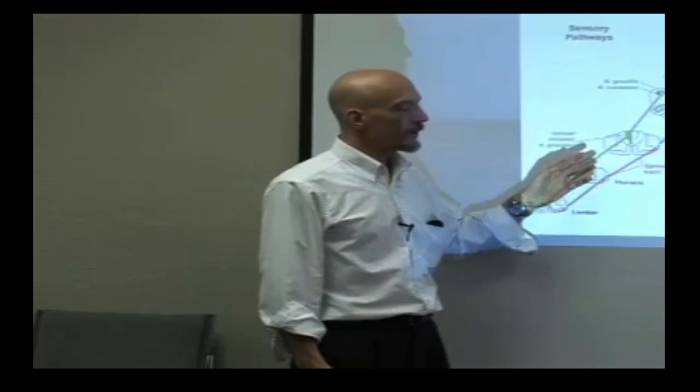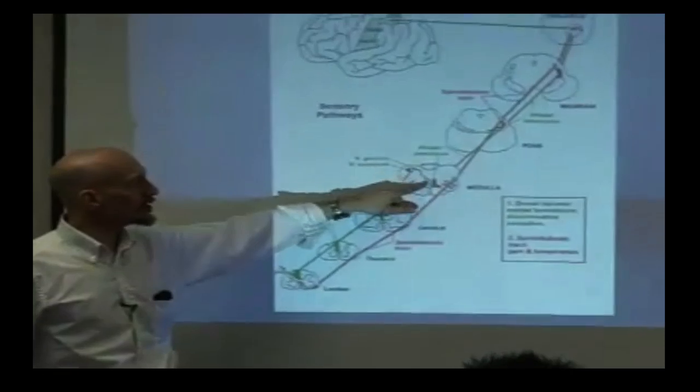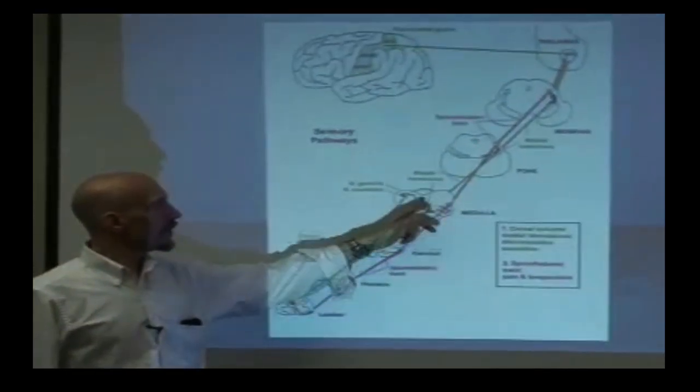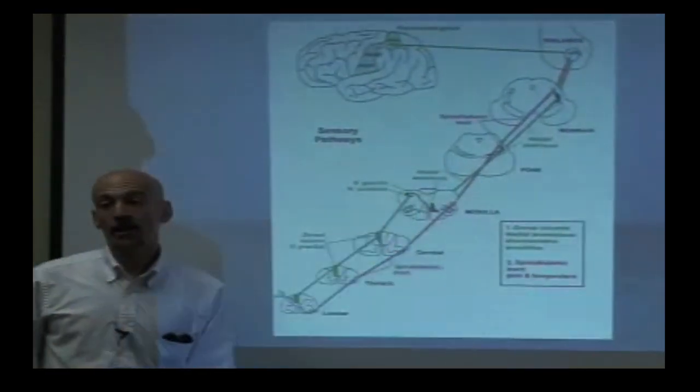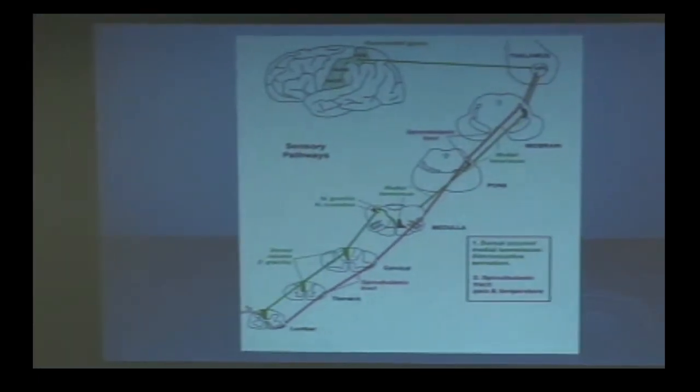Leg information is on the outside, arm information on the inside—opposite of what you might think. When it gets up to the cervical-medullary junction, it crosses. Something to remember: all second-order neurons always cross.